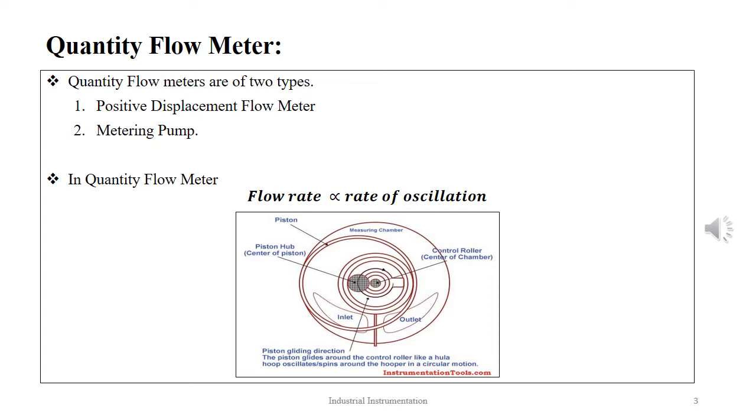In quantity flow meters, the flow rate is directly proportional to the rate of oscillation. The quantity flow meters are of two types: positive displacement flow meter and metering pump. Here we will talk about the positive displacement flow meter types.